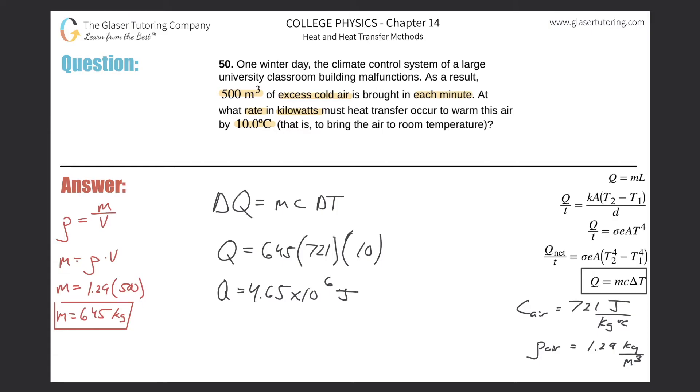Now, okay. Now let's think about what we just found, okay? Let's think about what's going on in the problem. So they tell us that this volume of air, which correlates to 645 kilograms of air, so basically 645 kilograms of cold air is coming into the room or being brought into the classroom, into the building every single minute, okay?